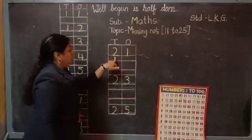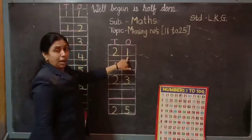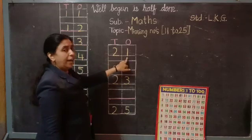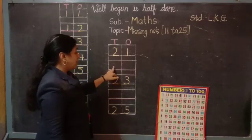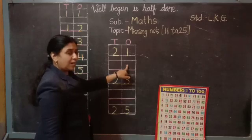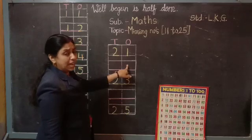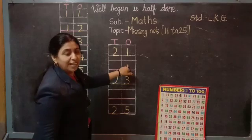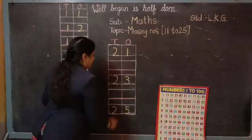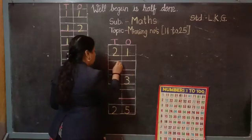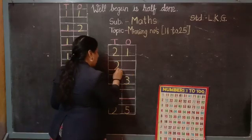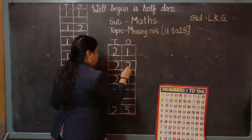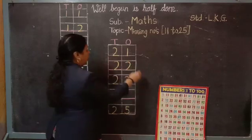Look here. 2-1, 21. Which number is missing here? Who will tell me? Anybody? Yes, 2-2, 22. Number 22 is missing here.